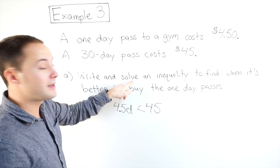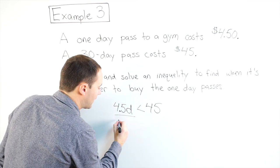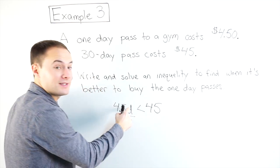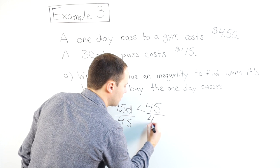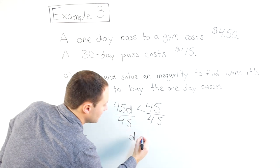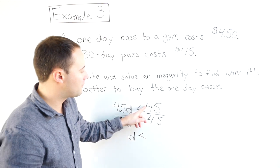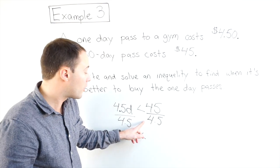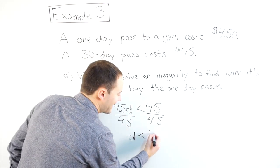So now let's solve it. We wrote the inequality, now let's solve it. Divide both sides by 4.5 to get that D, that variable alone. D is less than, well, 45 divided by 4.5 is 10.